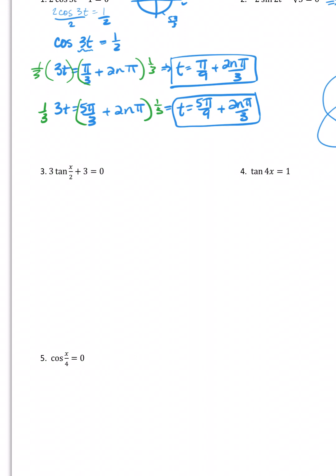Number three, if I move the three over first, let's see what happens. So tangent of x over two is negative three, or three tangent of x over two is negative three. Divide three by three. So I have the tangent of x over two is equal to negative one.